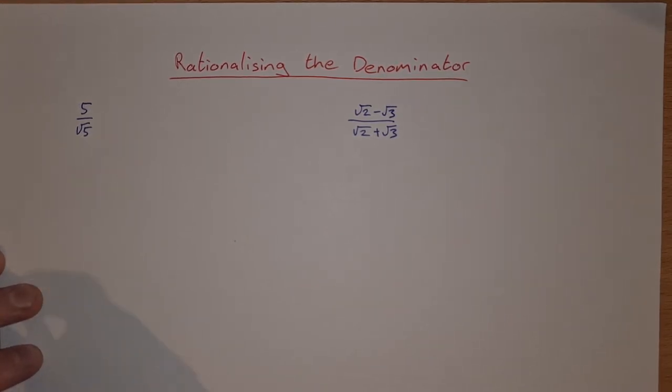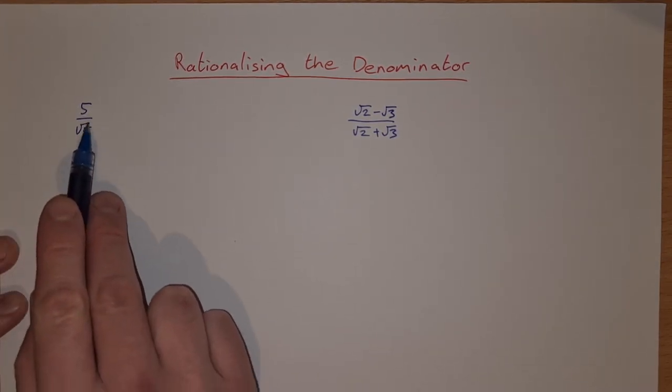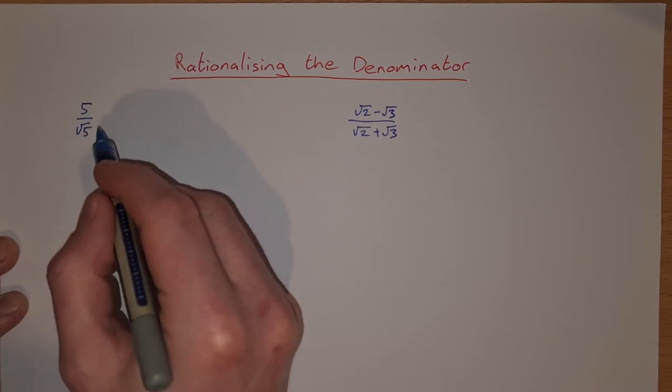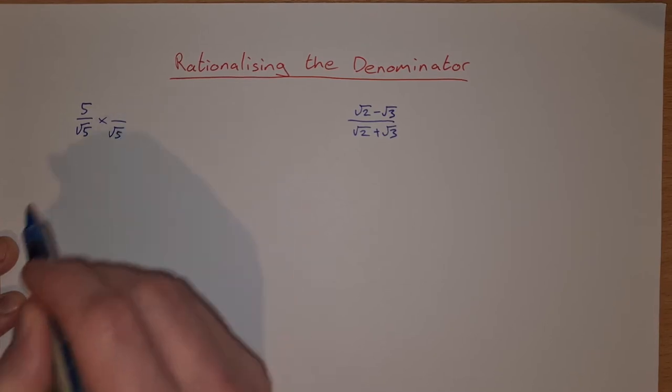So for example, if we have 5 over root 5, we don't want root 5 on the bottom. So to get rid of that square root of 5 on the bottom, I would multiply the denominator by the square root of 5.